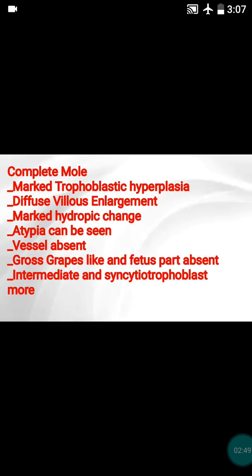Now we will see the complete mole. The important features of the complete mole are exactly opposite. The trophoblastic proliferation is markedly increased. There will be diffuse villar enlargement — almost 80 to 90 percent of villi are diffusely hydropic. There will be presence of some form of atypia, because there will be more intermediate trophoblast in the complete mole, and intermediate trophoblast has atypical features. The vessels are definitely absent because fetal parts are not present at all.